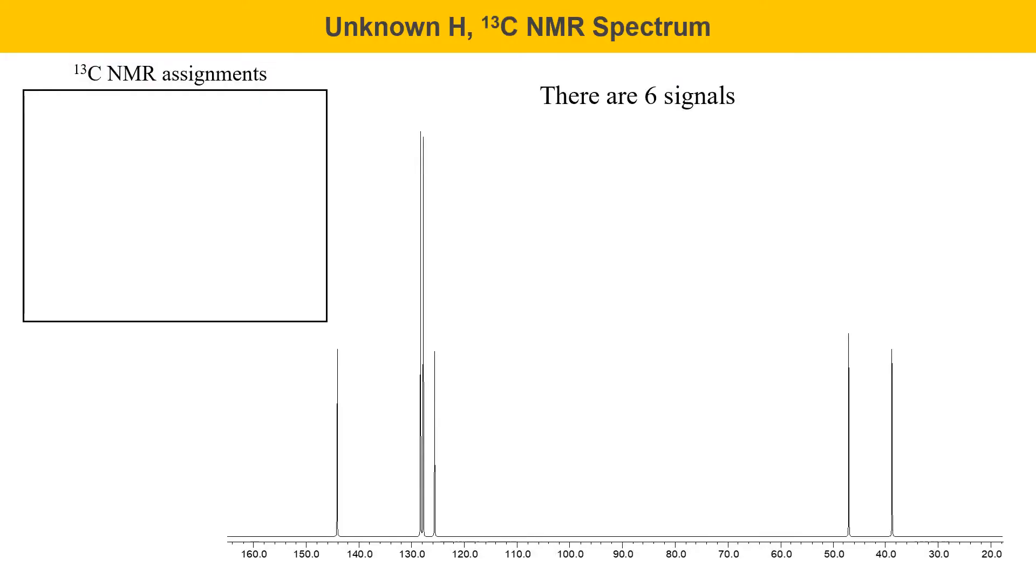The carbon-13 NMR for unknown H is shown here. There are a couple really fine lines here at around 128, and there's a total of six signals in this particular spectrum. So there are six unique carbon types in this molecule.